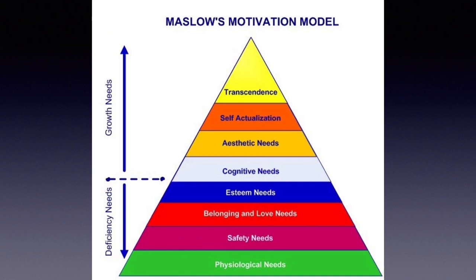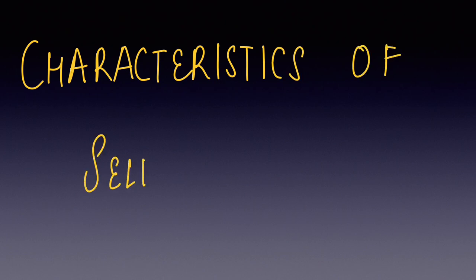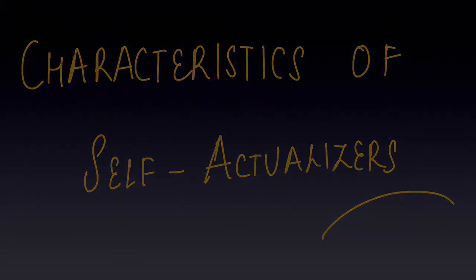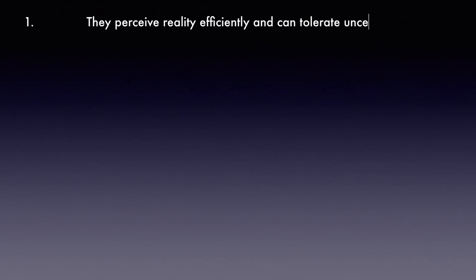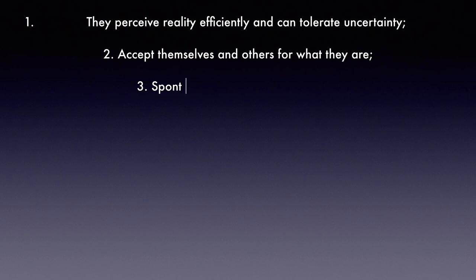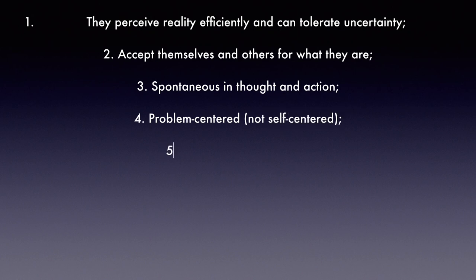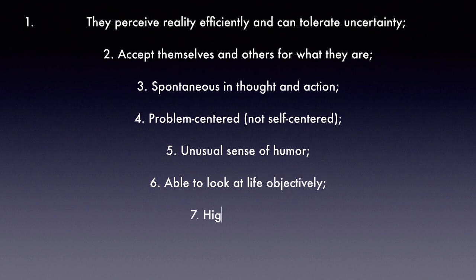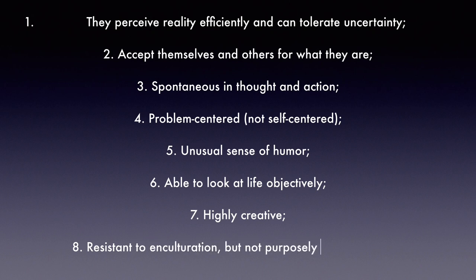You can see the new refined Maslow's motivational model pyramid with all eight needs. Now let's look at the characteristics of self-actualizers — what it means to achieve self-actualization. These people perceive reality efficiently and can tolerate uncertainty. They accept themselves and others for what they are, are spontaneous in thought and action, are problem-centered rather than self-centered, have an unusual sense of humor, look at life objectively, are very creative, and are resistant to enculturation but not purposely unconventional.